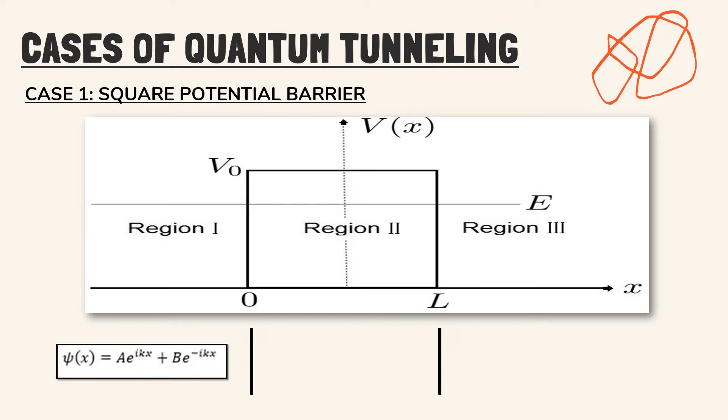In region 1, the first term represents incident wave, while the second term represents the reflected wave.